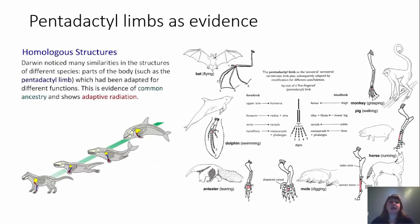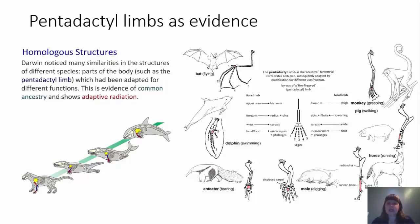Another thing to look at is pentadactyl limbs as evidence of evolution. Recall from introductory biology the term homologous structures. Darwin noticed many similarities in the structures of different species. Parts of the body, such as the pentadactyl limb, have been adapted for different functions, and the evidence of common ancestry shows adaptive radiation. A pentadactyl limb is a five-fingered limb — one bone that splits into two bones, that splits into many bones, that splits into five digits.